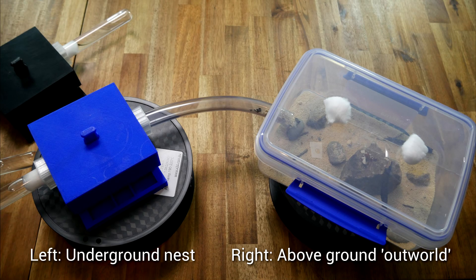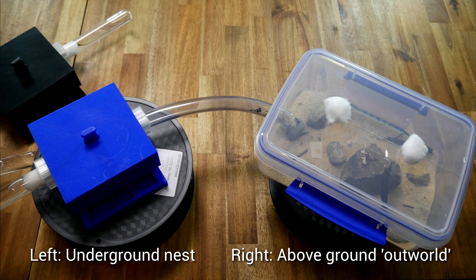Firstly for some context the 3D printed part is the formicarium on the left and that simulates an underground nest. Then we have a connective tube which serves as a tunnel up to the above ground or outworld area. This is where the ants forage for food and also dump their rubbish.